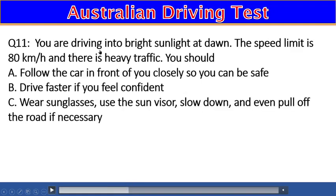Question 11: You are driving into bright sunlight at dawn. The speed limit is 80 km/h and there is heavy traffic. You should: A) Follow the car in front closely so you can be safe, B) Drive faster if you feel confident, C) Wear sunglasses, use the sun visor, slow down, and even pull off the road if necessary. The right answer is C.